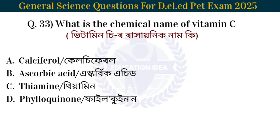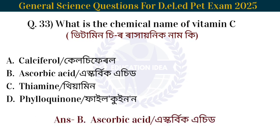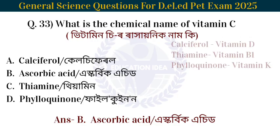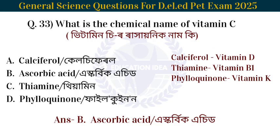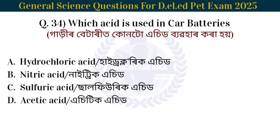Next question: What is the chemical name of vitamin C? The chemical name of vitamin C is ascorbic acid.